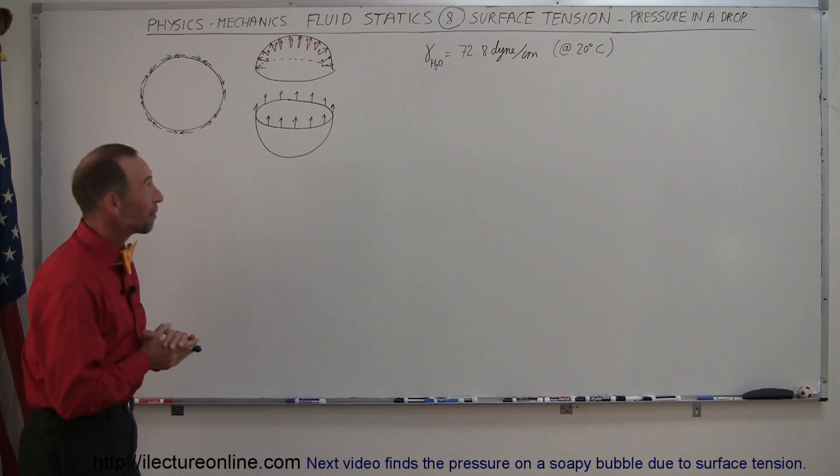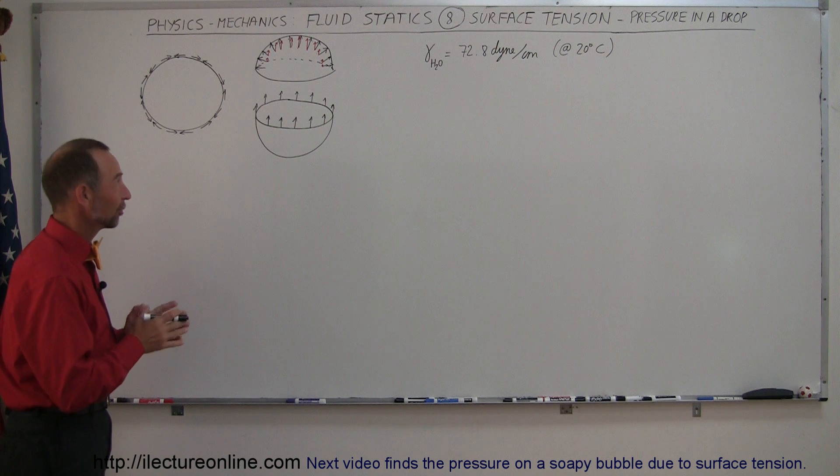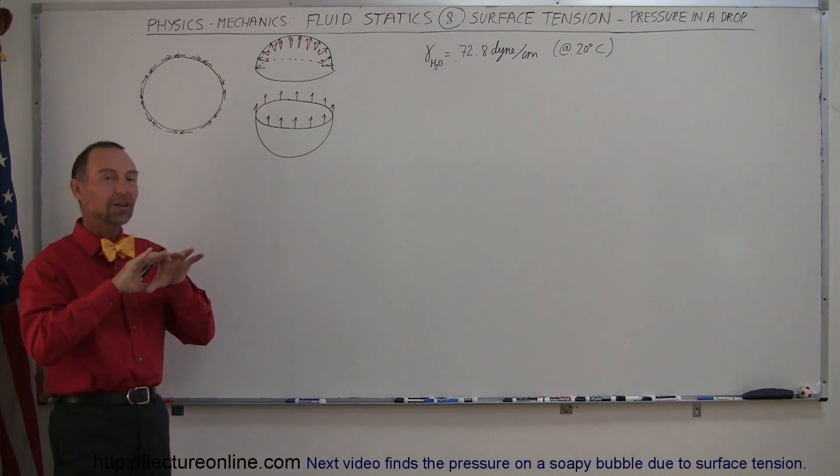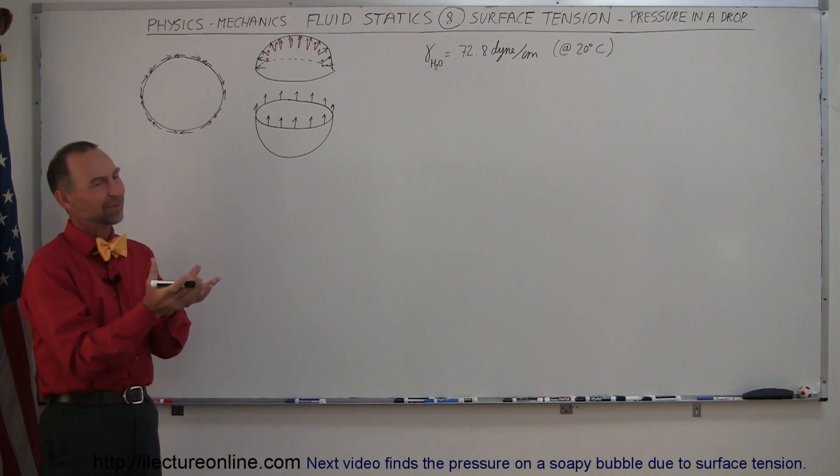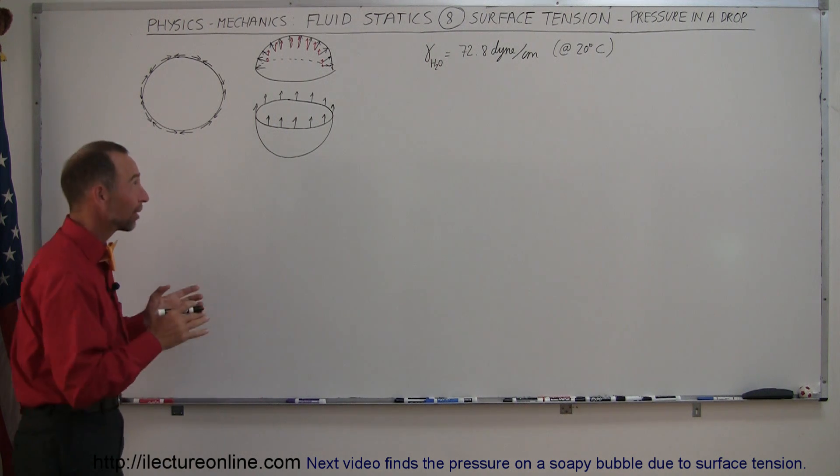Here's another really interesting example of surface tension, or at least the effects of surface tension. It turns out surface tension causes water to appear in drops. Of course, everybody already knows that, but probably didn't think about the fact that it was because of surface tension.